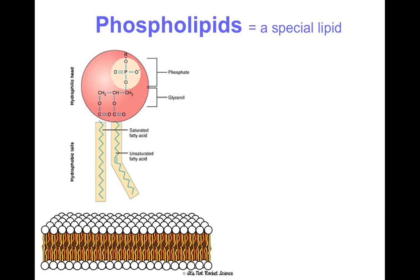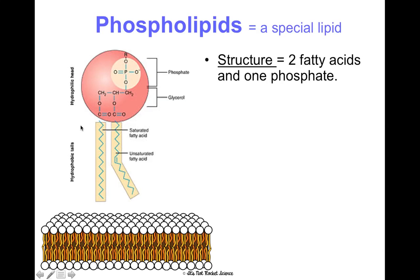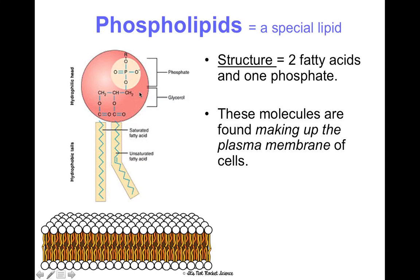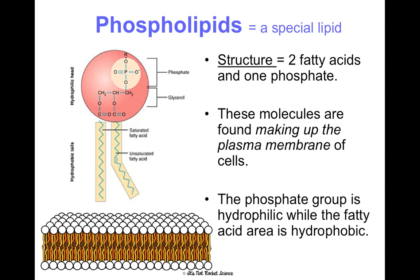A special lipid to highlight are phospholipids, and these will be so important when we get to cells. Phospholipids make up the cell membrane. You can see they have little circular heads and little tails, arranged in two layers. The structure includes two fatty acids and a phosphate head. These molecules make up the plasma or cell membrane. The phosphate head is hydrophilic, meaning it likes water, and the tails are hydrophobic, meaning they don't like water. The way they're oriented really matters, which we'll get to when we discuss the cell membrane.